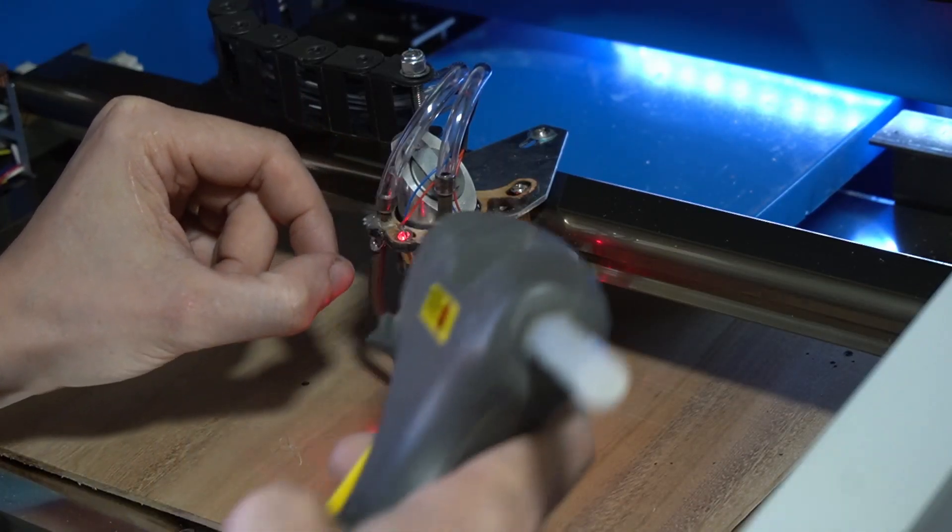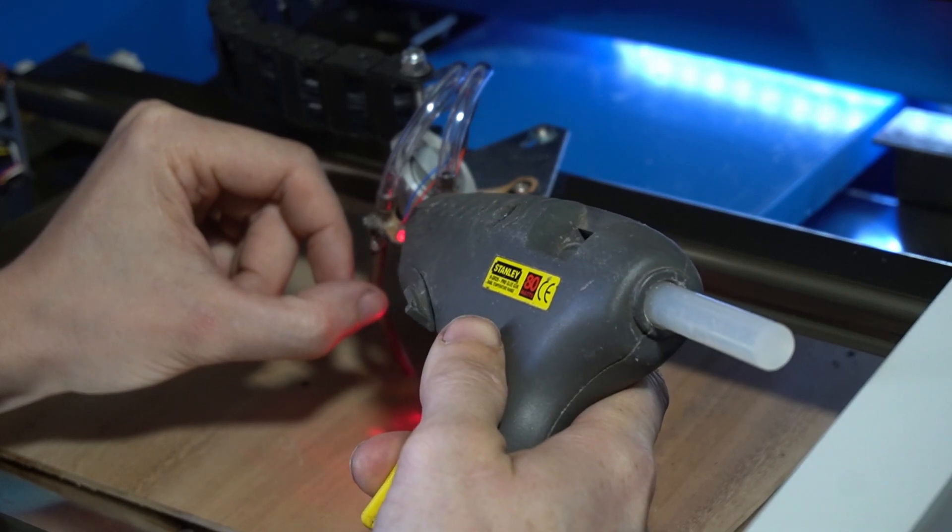And now the lasers are working, I need to aim them and then stick them in place so they don't wiggle around and not aim properly anymore. So the reason I put two lasers in is that they're aimed at the focal point of where the laser should be, and if the material is too high or too low we'll end up with two dots rather than one dot.